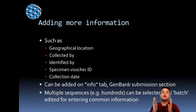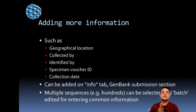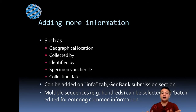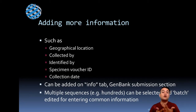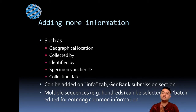You can add more information as well — for example, the geographical location from where you isolated the sample, who collected it, who identified the species, and what the specimen voucher ID is. A specimen voucher ID is an ID for a voucher specimen, for example a herbarium sheet. This number is very important if you are working with taxonomic data. Most taxonomists overlook this and simply submit without a fully annotated sequence, which is not a good practice at all.